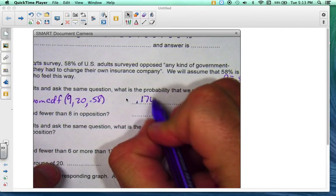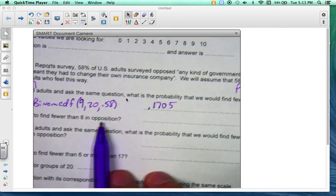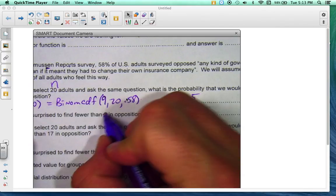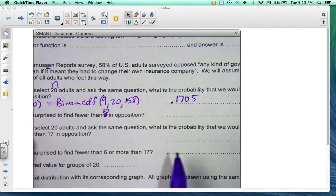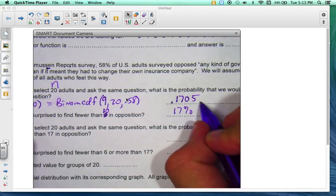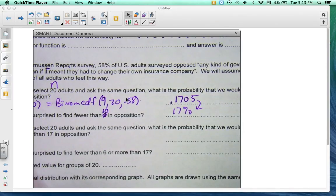So 0.1705. Now would you be surprised to find fewer than 10 in opposition? Well, that means 17%, if we convert that to 17%, 17% are in opposition. That is not unusual. Usually if it's less than 5% or close to, say, 1% or 2%, yeah, then it might be a little unusual. But for this case, it's not unusual.